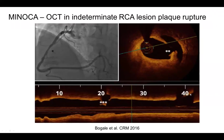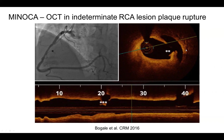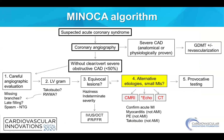Here is another case using OCT: a patient with suspected ACS underwent coronary angiography demonstrating no overt obstructive disease except for indeterminate moderate disease in the RCA. Further evaluation with OCT demonstrated a clear ruptured plaque in the RCA that was subsequently treated. Intracoronary imaging can thus assist with diagnosis.